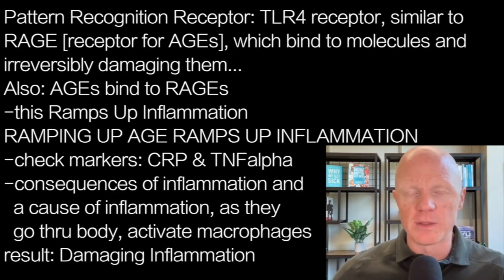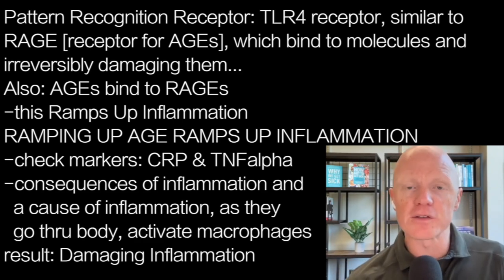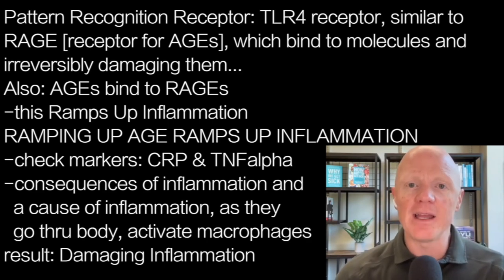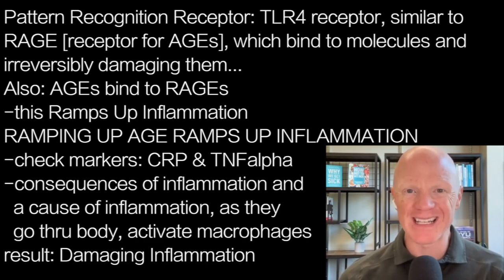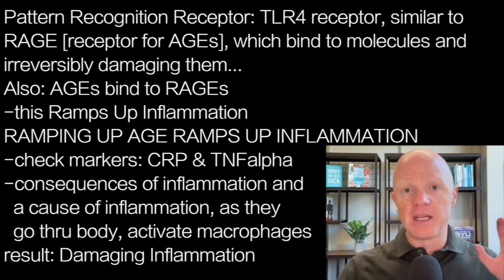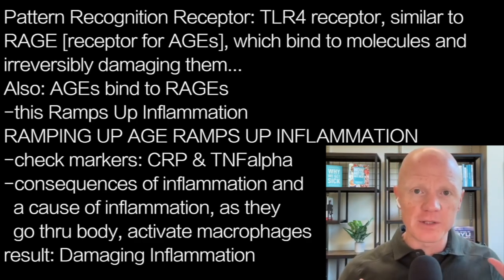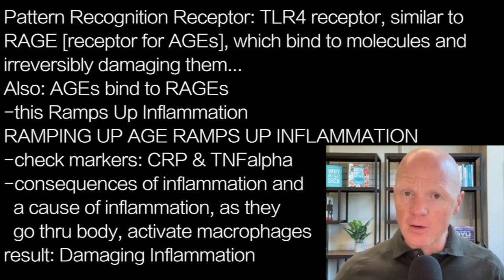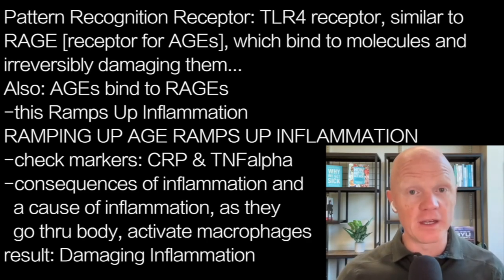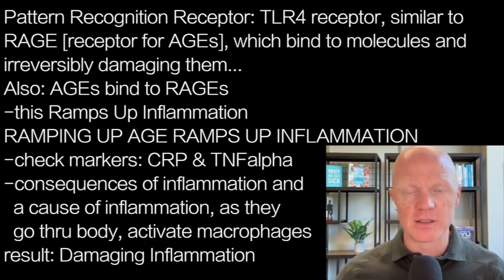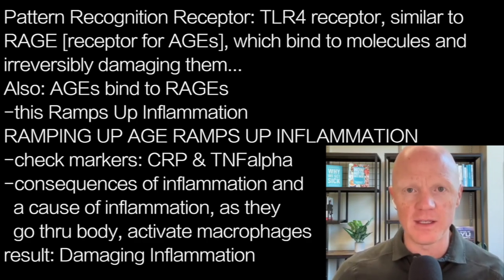When I first brought up AGE formation, I mentioned there's an inflammatory component to this. This is where Dr. Reynolds, my friend and colleague, and I first started collaborating. When I was a young professor, one of my primary focuses was something called a pattern recognition receptor, particularly a receptor on a cell — like a baseball mitt used to catching things. The receptor I studied was one called TLR4. TLR4 has substantial similarities with another pattern recognition receptor called RAGE — R-A-G-E — which is the receptor for advanced glycation end products.